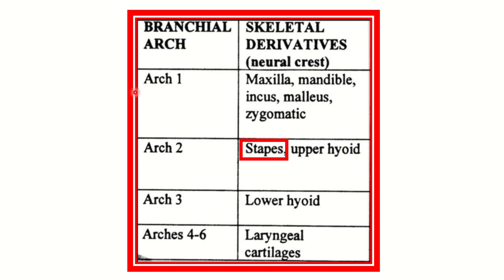From arch one, the maxilla, mandible, malleus, incus, and zygomatic bone are derived. From the second arch, the stapes and the upper part of the hyoid bone are derived.